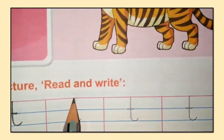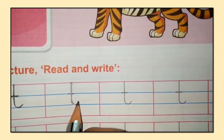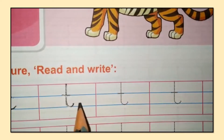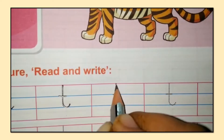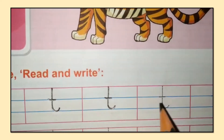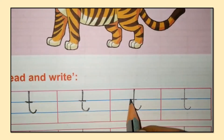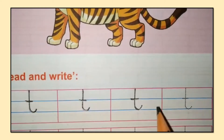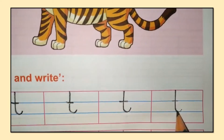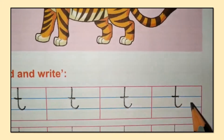We will write it again. A standing line, then a small curve, go to the middle of the line, and make a small slipping line. Standing line, small curve, and a slipping line — that is small T.